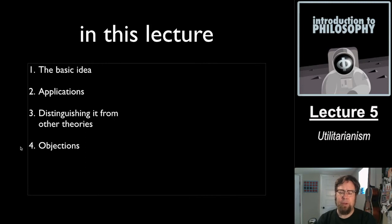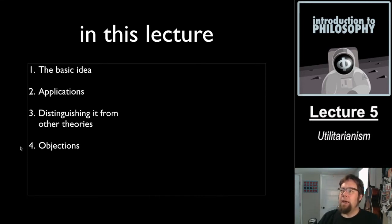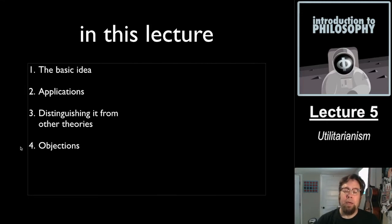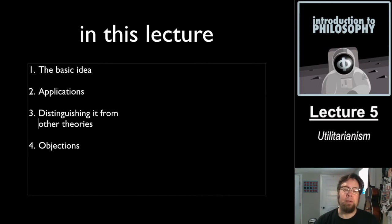There's often a lot of focus on objections to a theory, and you might wonder what's the point of learning about a theory if it has so many objections. One point is that getting to the ultimate truth involves knowing what's wrong and then figuring out how to fix it. Another answer is that it's good to know whether a theory has responses to the objections — whether it can survive the criticisms. And knowing what is allegedly wrong with a theory can put you in a better position to see what is actually right in it.